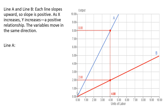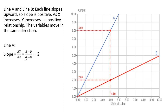Moving on, we have two straight lines here — line A and line B. Each line slopes upwards, so the slope is positive. As X increases, Y increases, so we're dealing with a positive relationship in both cases. The variables are moving in the same direction. Let's calculate the slope of line A by looking at the change in Y over the change in X.